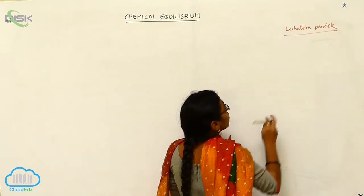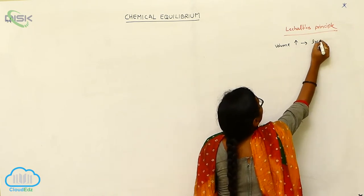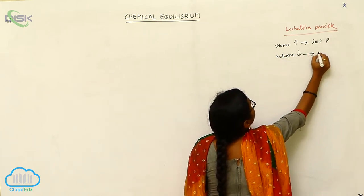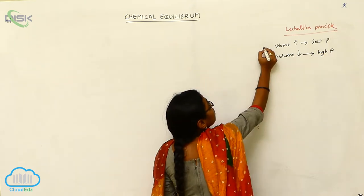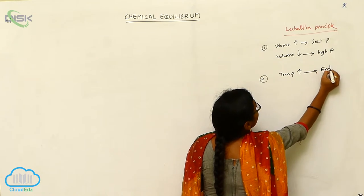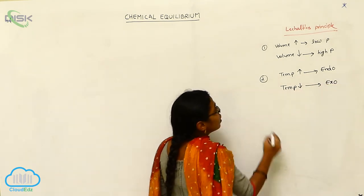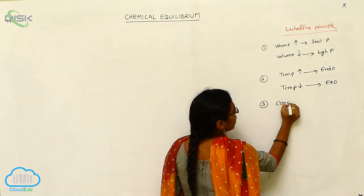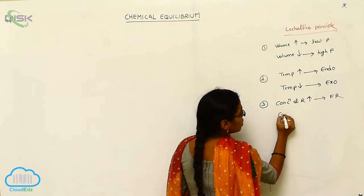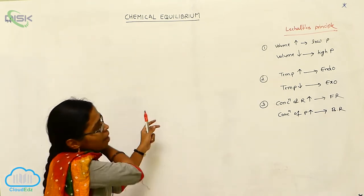Whenever volume increases, low pressure is favorable. Whenever volume decreases, high pressure is favorable. Whenever temperature increases, the endothermic reaction takes place. Whenever temperature decreases, that is favorable for the exothermic side. Regarding concentration: if the concentration of reactants increases, the forward reaction takes place; if the concentration of products increases, the backward reaction takes place.